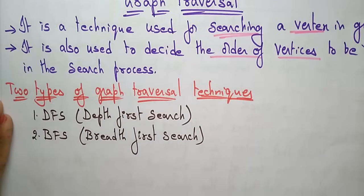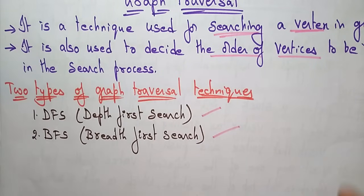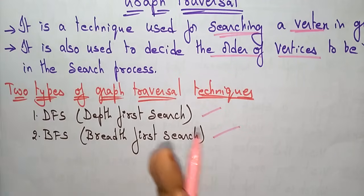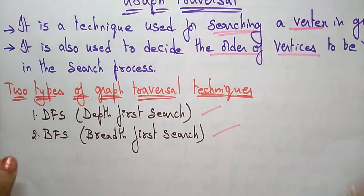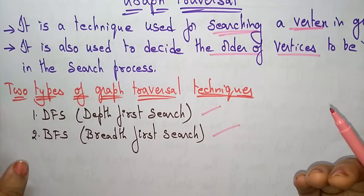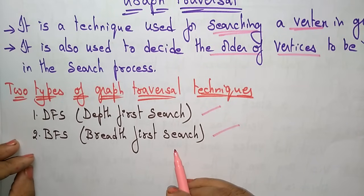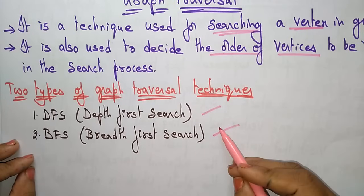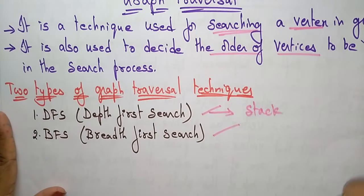There are two types of graph traversal techniques: depth first search and breadth first search. We had already seen DFS and BFS when discussing trees and stacks. The main difference is that DFS uses a stack data structure for storing the values.